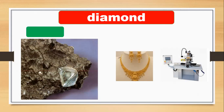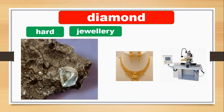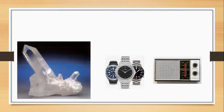Why do we use diamond in jewelry and cutting machines? Because diamond is very hard. You can make jewelry and you can use diamond in cutting machines. Let's talk about our next rock.